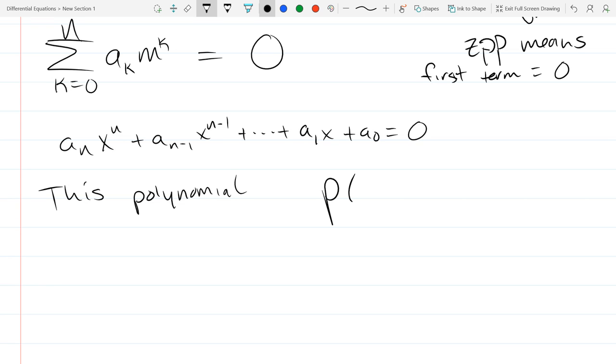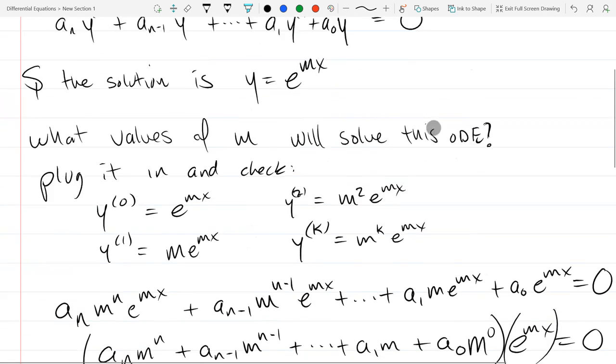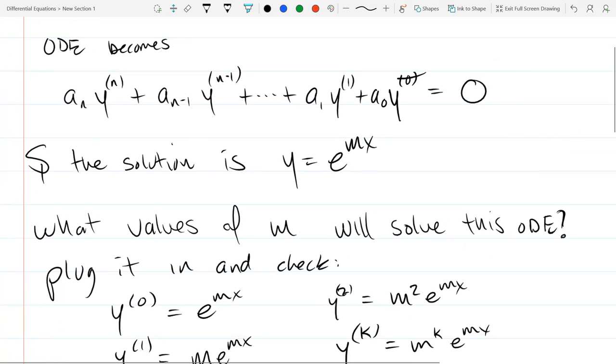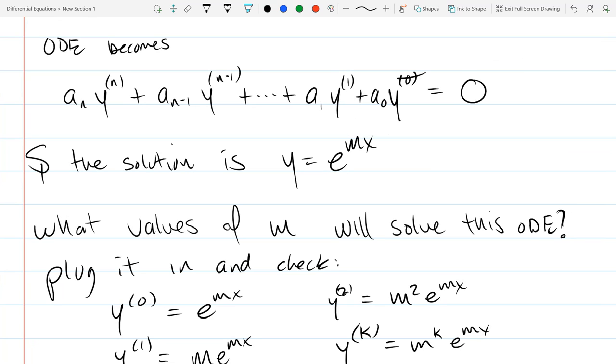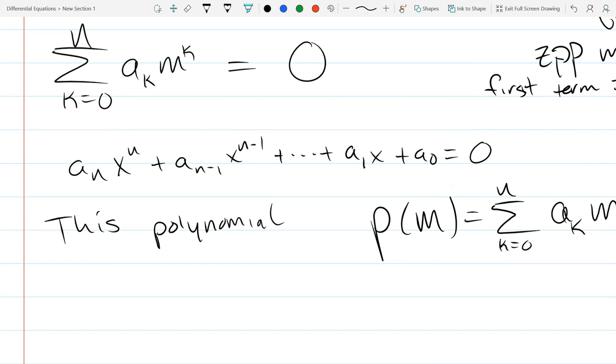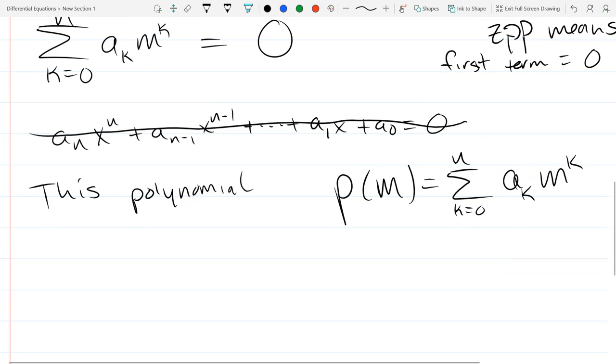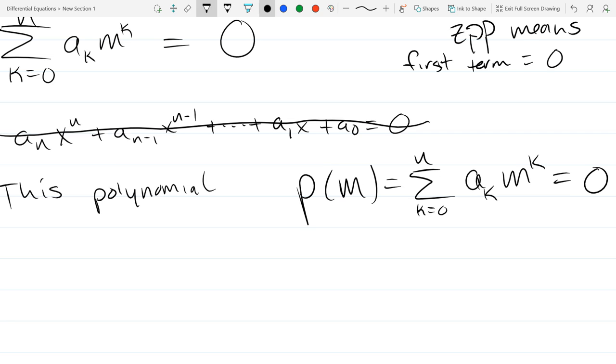All you did was set m equal to x and just swapped out letters. What is this? It's an equation, but what type? Polynomial. Nth degree polynomial. Coefficients and powers of x or powers of m. But the a's are the numbers, constant, and we have to figure out what x values, or in our case what m values, satisfy this. So this is basically a pre-calculus one question. So it's a polynomial.